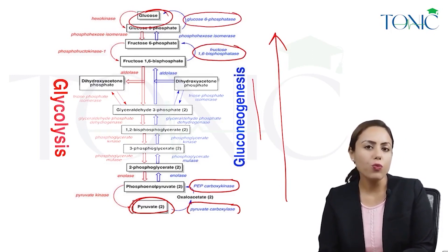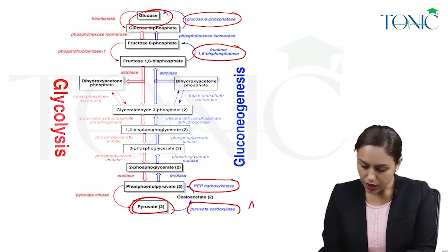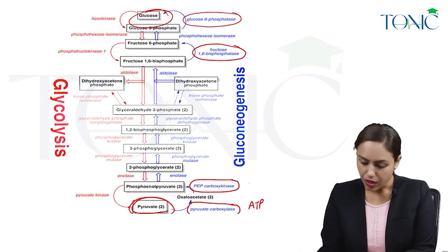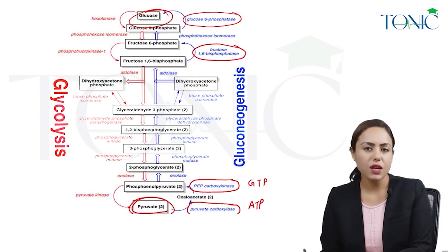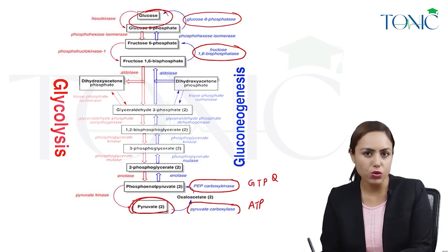2 pyruvate will be converted to 1 glucose molecule. Pyruvate carboxylase will use ATP — any carboxylase uses ATP. PEPCK is a kinase and it will use GTP. PEPCK, the enzyme of gluconeogenesis, uses GTP — this is very important and an MCQ point as well.